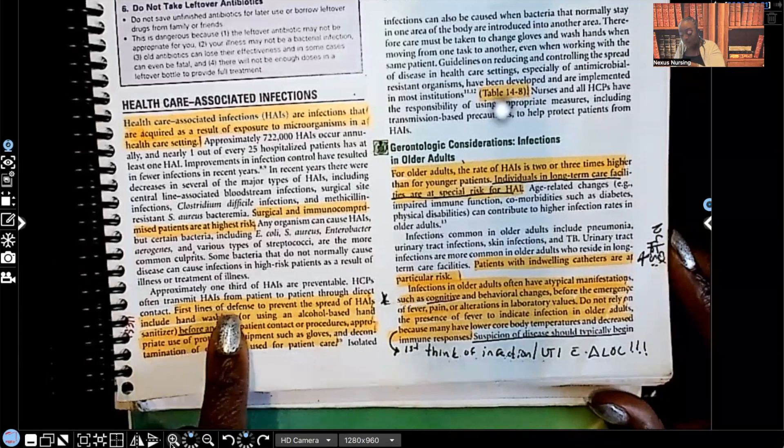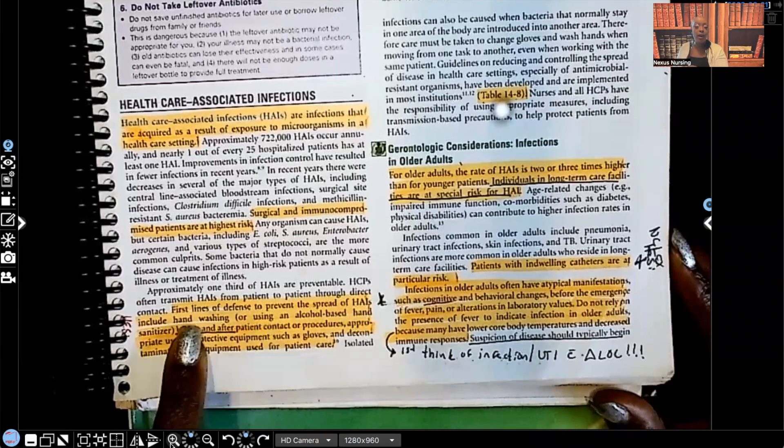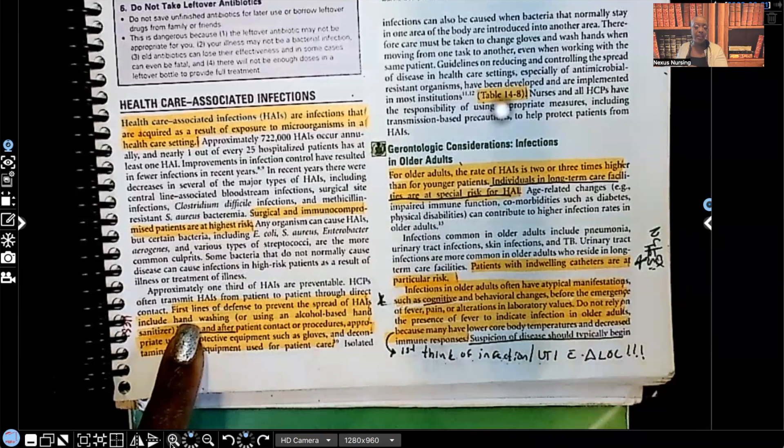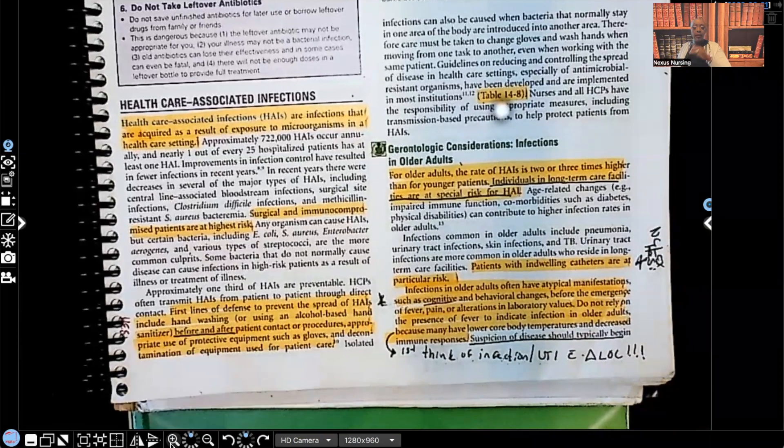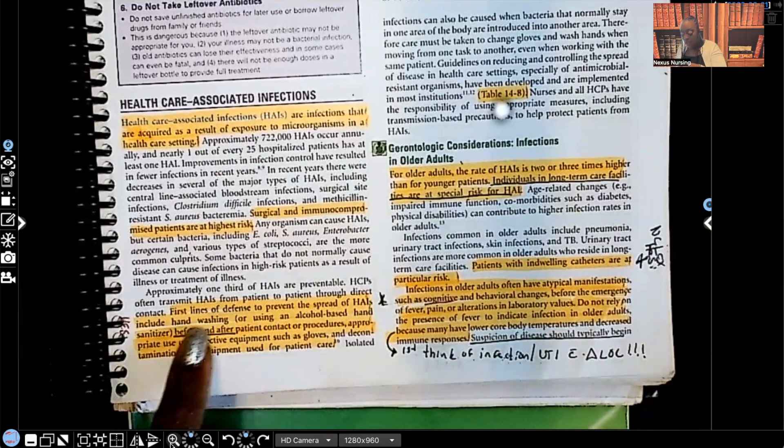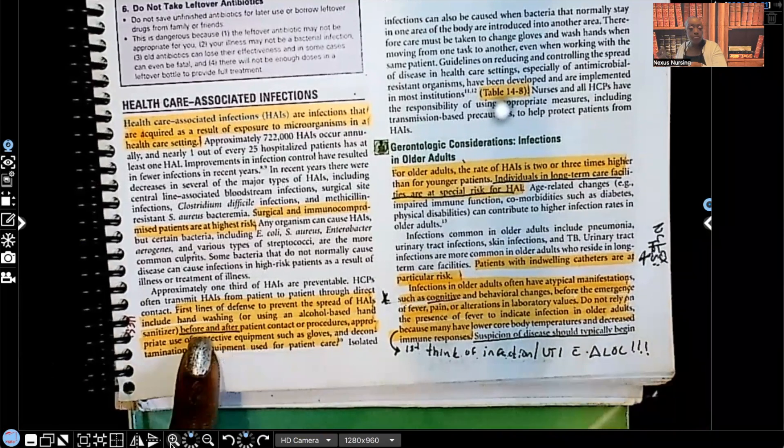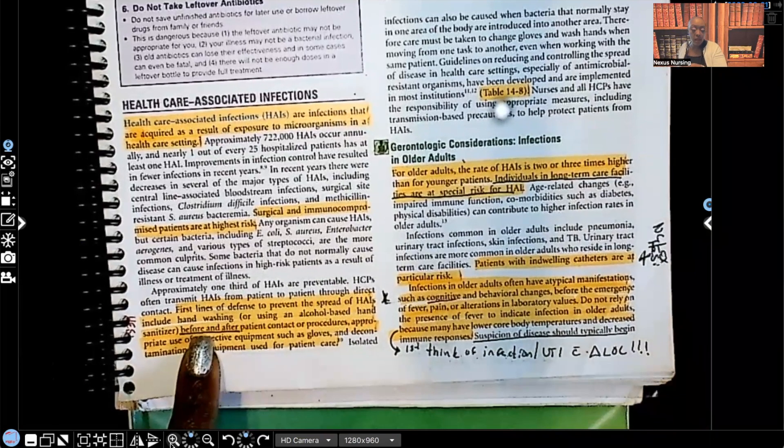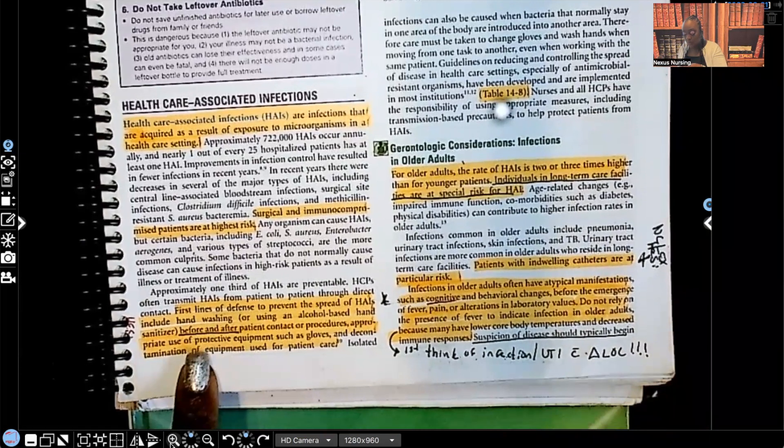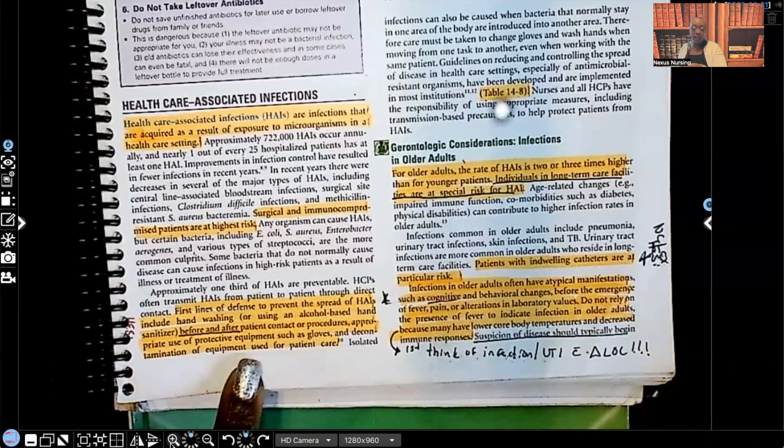First lines of defense to prevent the spread of healthcare-associated infections include number one, and guys, this is never going to change. It's always going to be hand-washing first. The best way to prevent transmission of infection is hand-washing every single time. Hand-washing, using alcohol-based hand sanitizer. That's after hand-washing. Hand-washing with soap and water is always going to be number one. And doing that before and after contact with the patient, procedures, appropriate use of PPE such as gloves, decontamination of equipment used in patient care.